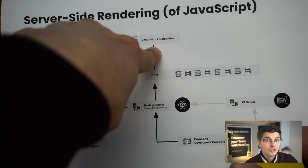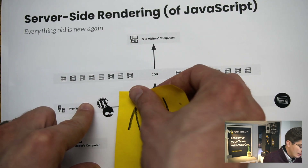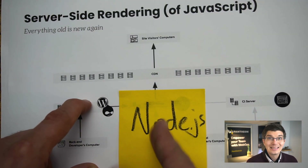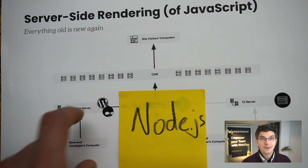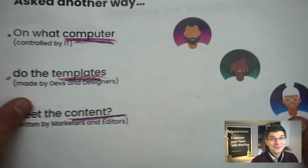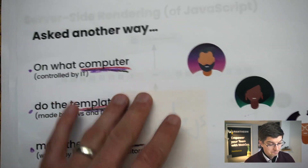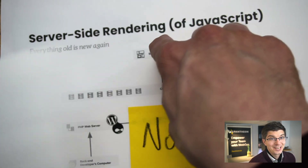Everything old is new again. Watching web development Twitter now, it's kind of head-spinning to watch new frameworks brag about how little JavaScript gets out to the end user's website. They're pushing the needle by relying more and more on a Node.js server or something Node-like to do the heavy lifting on this side of the CDN. We are never not rebalancing the needs of the people on the web team and, definitely more importantly, the needs of the people visiting the website.